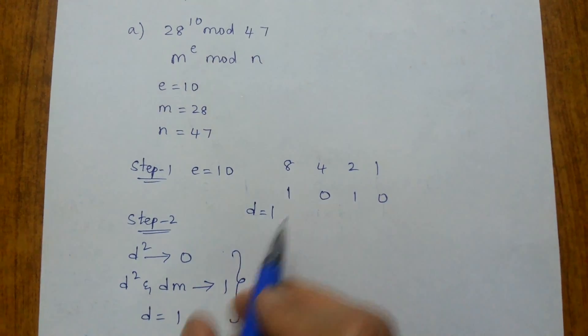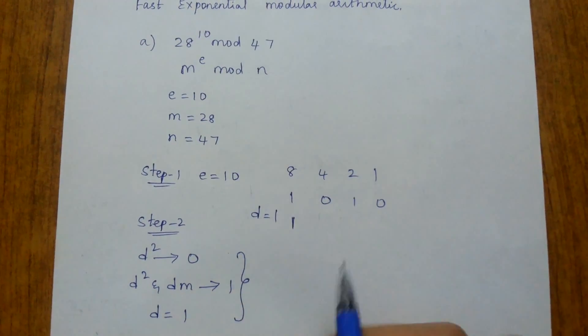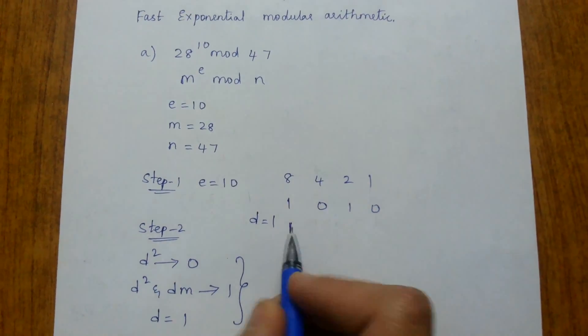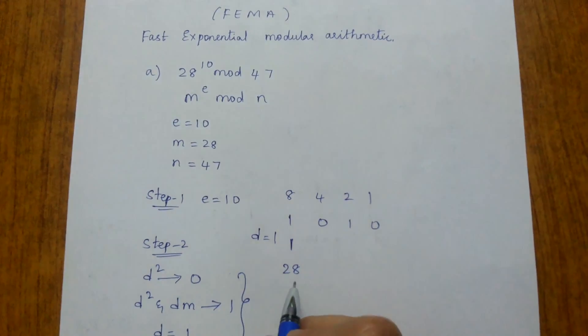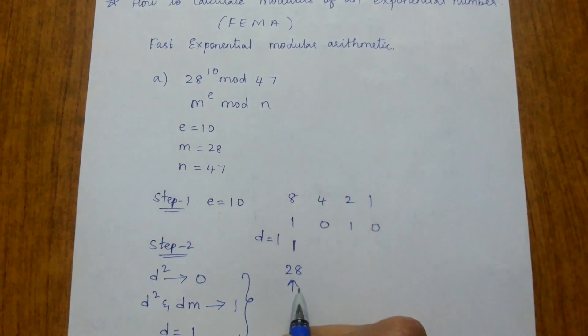Since we see 1 here, we do d² and dm operations. d² is 1² = 1, and d×m where m is 28, so d×m is 28. Now the present value of d is not 1, it is 28. New value of d is 28.